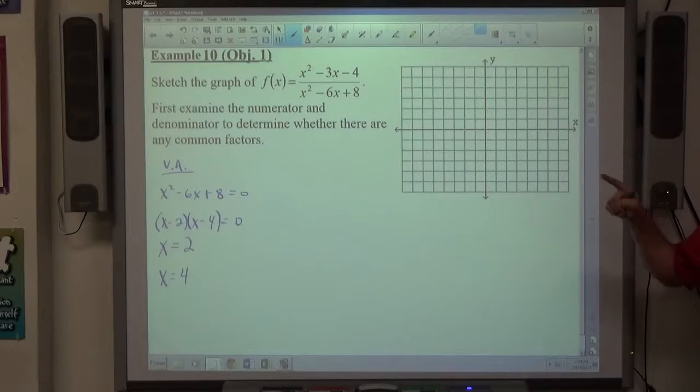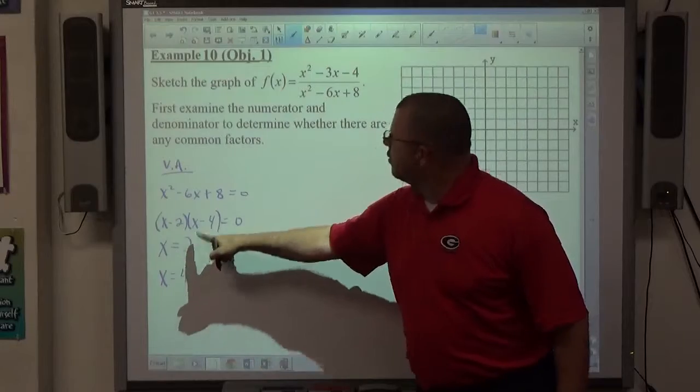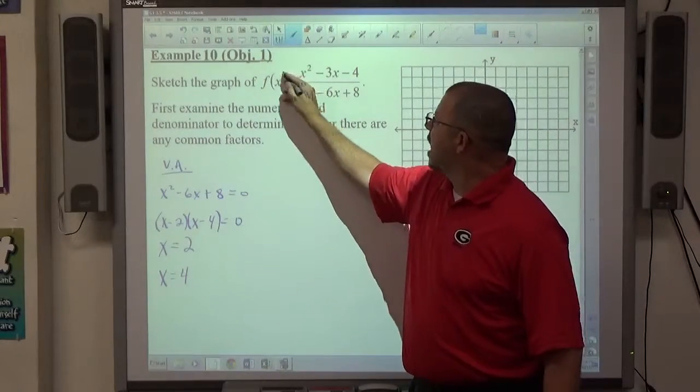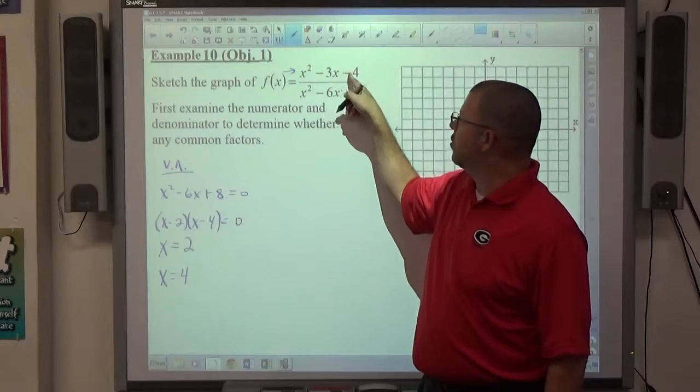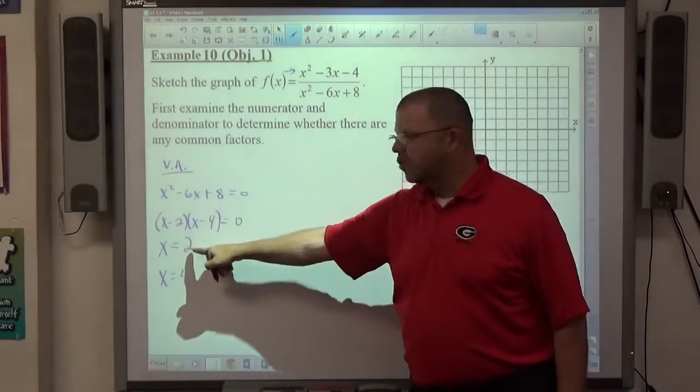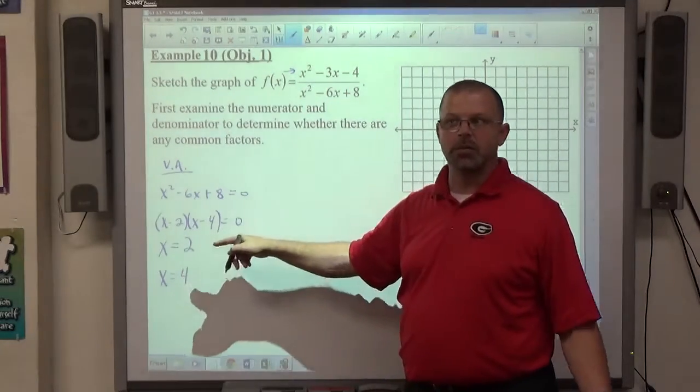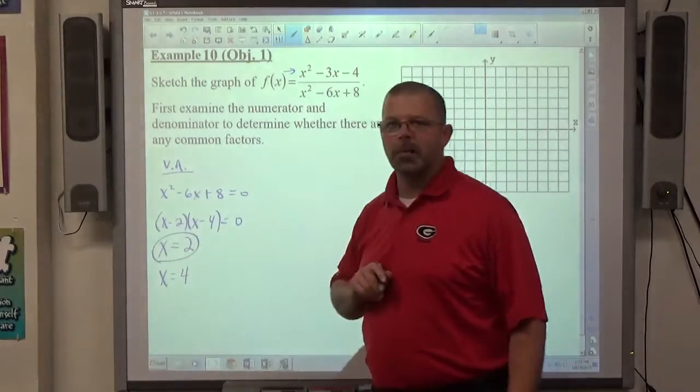We then have to verify that either one of those answers makes the top also equal to 0. So, if I try 2 up here for x in the top, 2² is 4, minus 6 is -2, minus 4 is -6. 2 makes the top -6. -6/0 is undefined. That is an actual vertical asymptote for this problem.